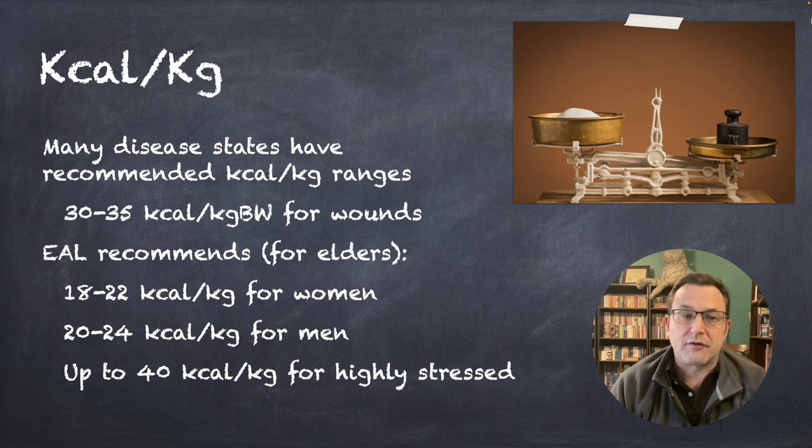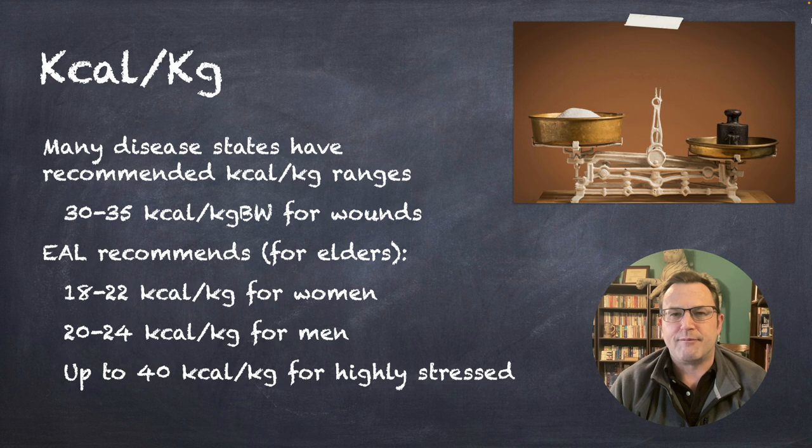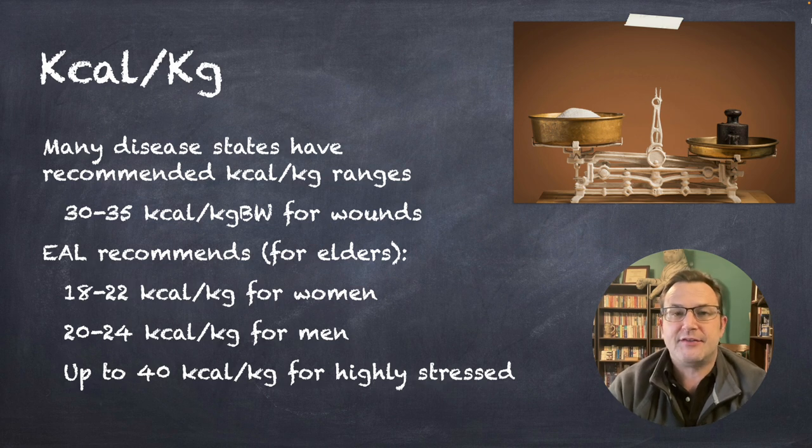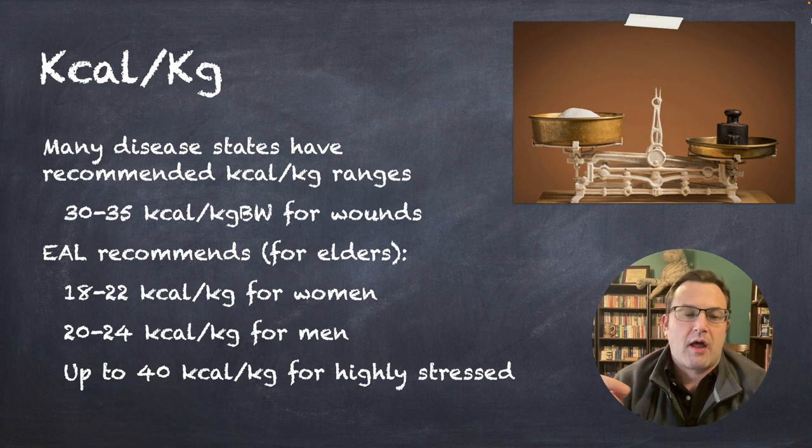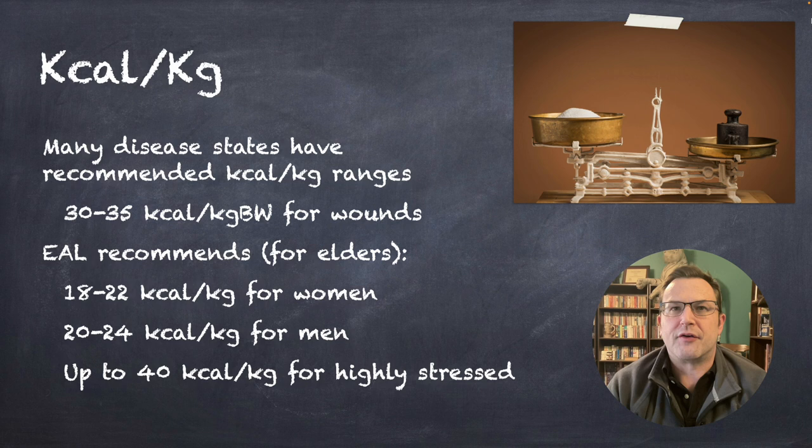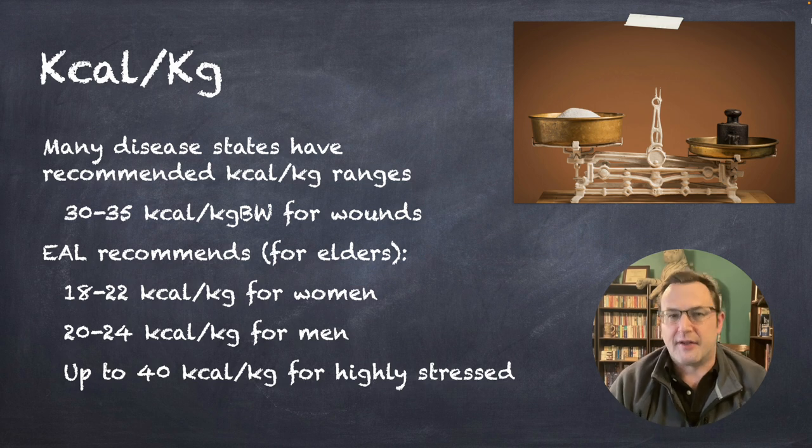So, the other option is kilocalories per kilogram. Many disease states have a recommended kilocalorie per kilogram range. For example, 30 to 35 calories per kilogram for wounds. This actually is noted in the evidence analysis library. They note 18 to 22 calories per kilogram for women and 20 to 24 calories per kilogram for men. An elder patient can need up to 40 calories per kilogram, depending on the level of stresses involved.